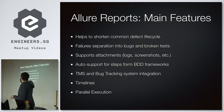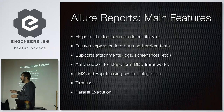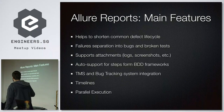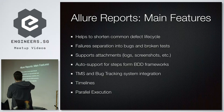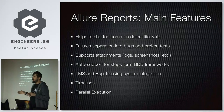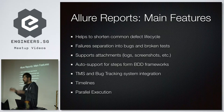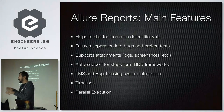Allure has integration with TMS and bug tracking systems. If you mark a test that already has a known bug, it won't show a red status — it shows the bug reference instead. It has timelines and supports parallel execution. When used with Jenkins or TeamCity, it maintains execution history so you can see how flaky or unstable any given test is over time.